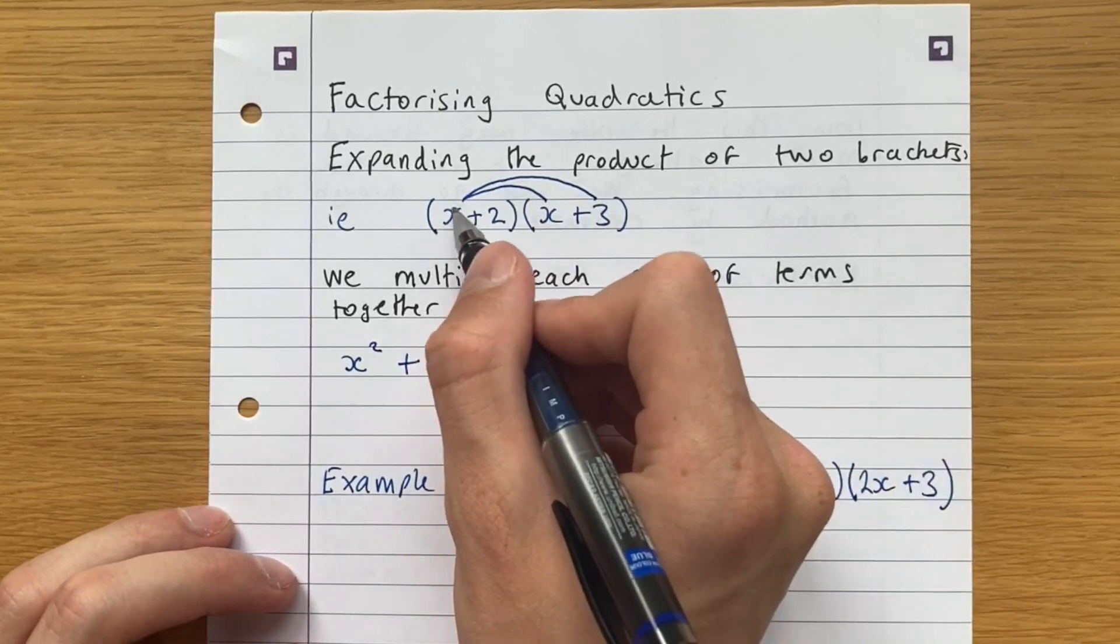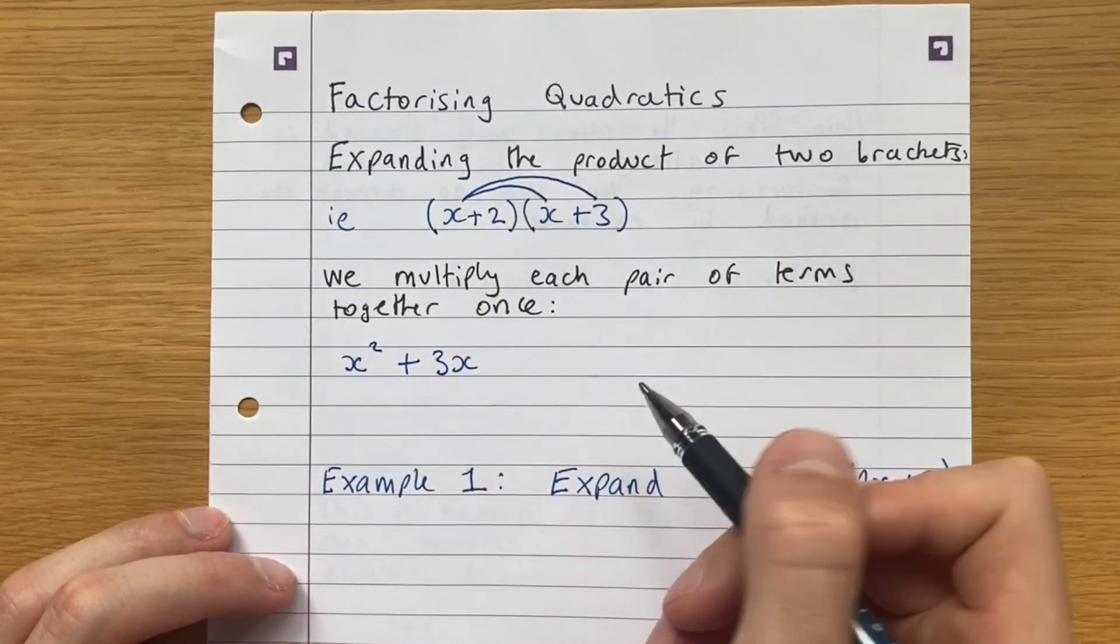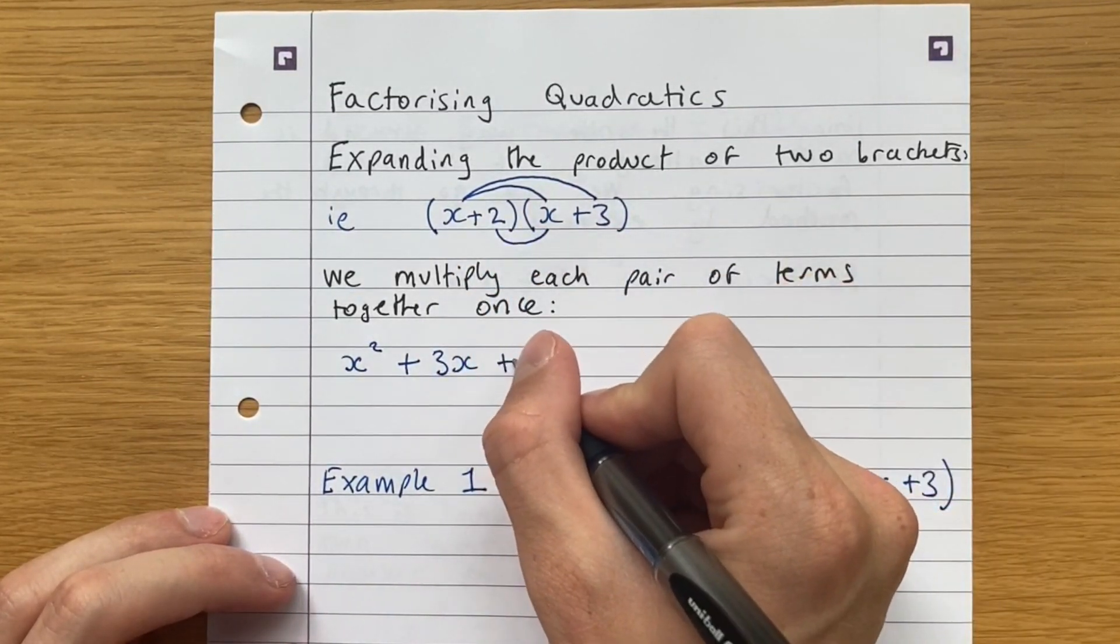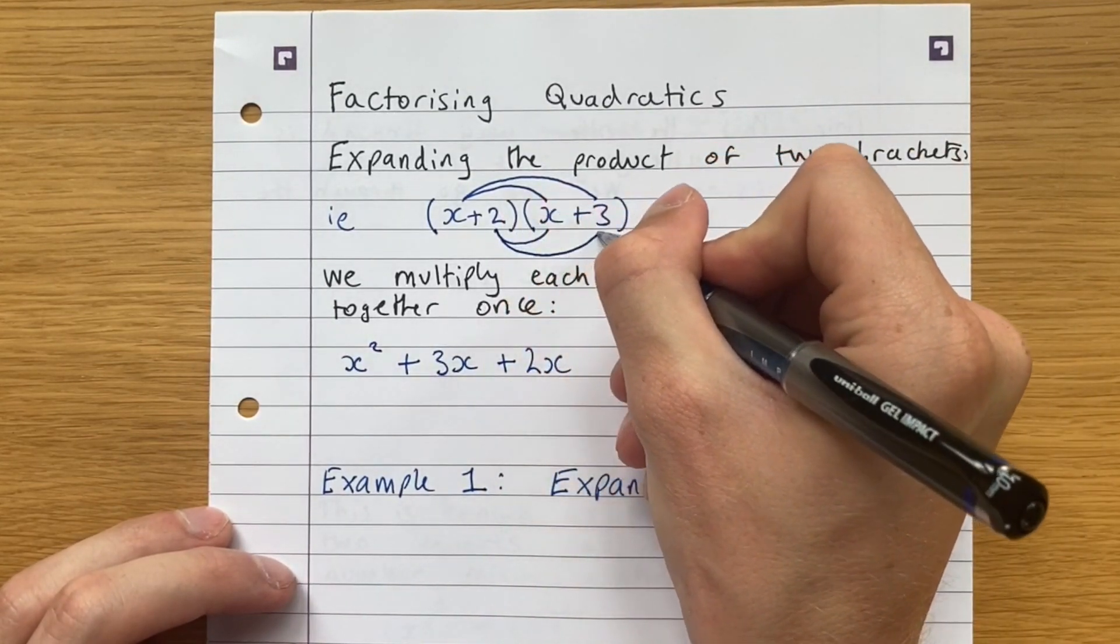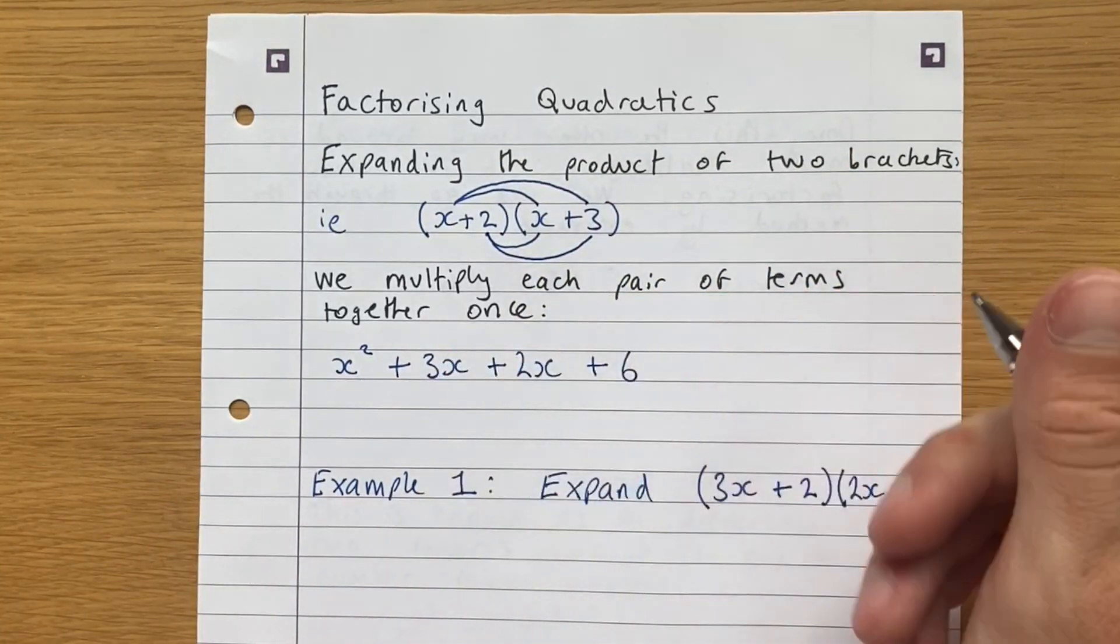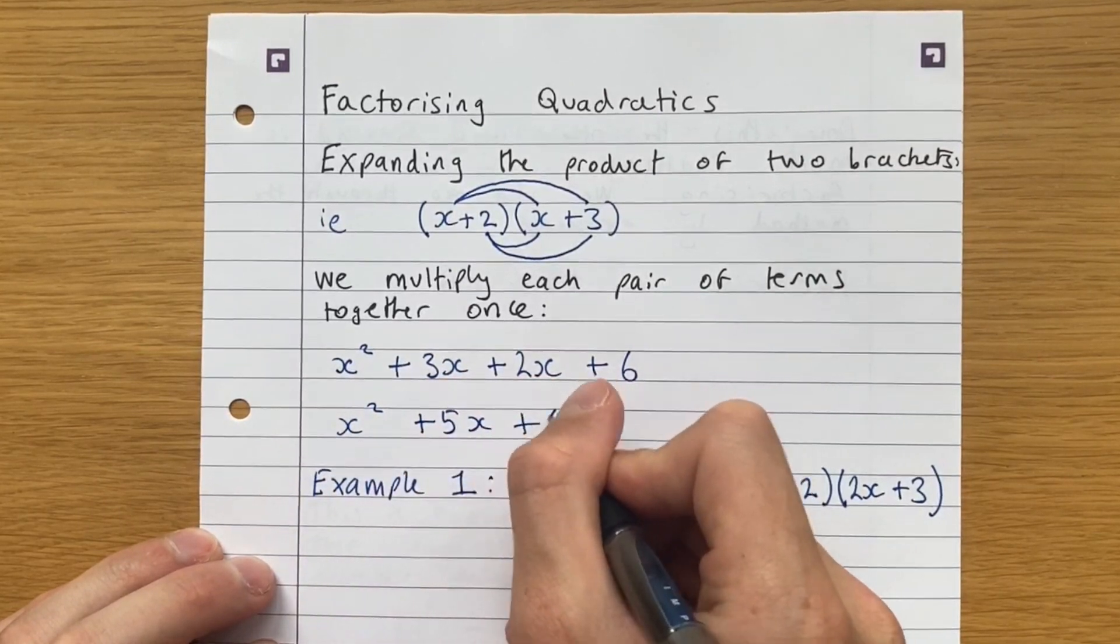So now x has been multiplied by every term in the other bracket, so we can move on to the next term, 2. We get 2 times x, and finally 2 times 3, which is 6.